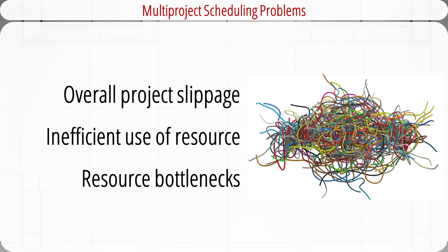We have discussed key resource allocation issues within the context of a single project. In reality, resource allocation generally occurs in a multi-project environment, where the demands of one project have to be reconciled with the needs of other ongoing projects. Multi-project scheduling is more difficult than single-project scheduling due to problem size and complexity. One common problem is overall project slippage — delay on one project creates delays for others. Another problem is inefficient resource utilization: peaks and valleys of resource demands create scheduling problems, and bottlenecks in critical resources required by multiple projects cause delays and schedule extensions.